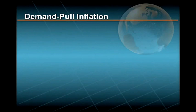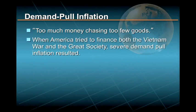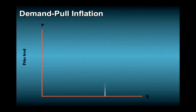The essence of demand-pull inflation is too much money chasing too few goods, and that is exactly what happened when the U.S. tried to finance both guns and butter — both the Vietnam War and the Great Society. This situation is illustrated in this figure.